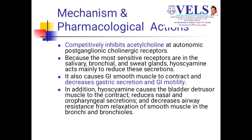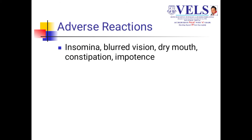Mechanism and pharmacological action: hyoscine competitively inhibits acetylcholine at autonomic post-ganglionic cholinergic receptors, that is the M3 receptor. Because of its action on the most sensitive receptors, it also reduces secretions in the salivary glands, bronchial glands, and sweat glands. It also causes GI smooth muscle relaxation, resulting in increased GI motility and decreased gastric secretion. Hyoscine also causes bladder detrusor muscle relaxation, reduces nasal and oropharyngeal secretions, and decreases airway resistance by relaxing smooth muscle in bronchi and bronchioles.